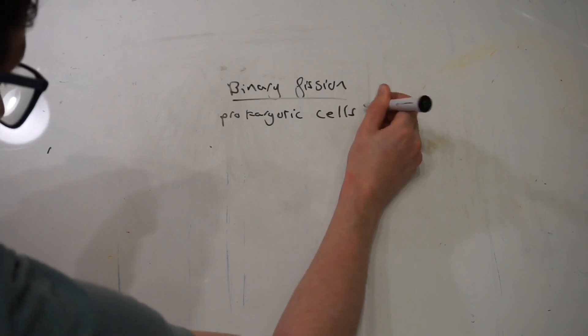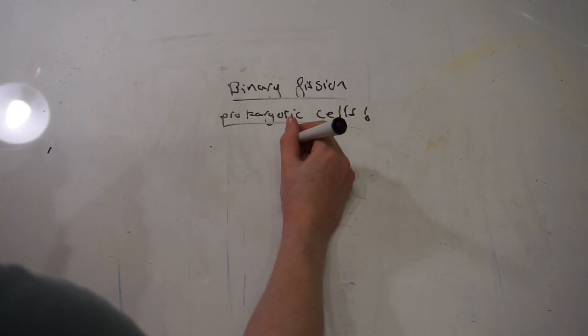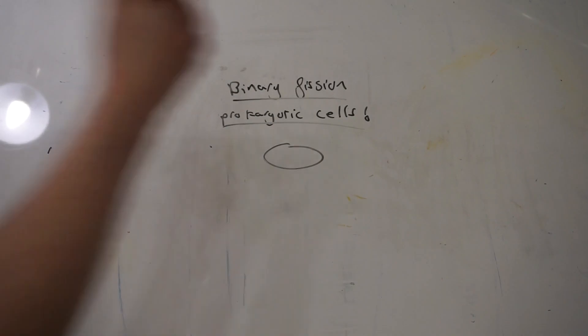Prokaryotic cells, as we've talked about in previous videos, are very simple, generally single-celled organisms that have no nucleus and no membrane-bound organelles within them. They've just got all their stuff floating around within their membrane, so they're very simple basically.